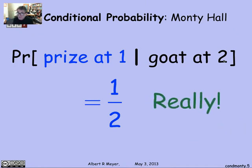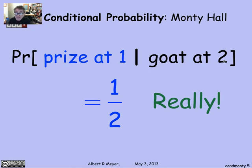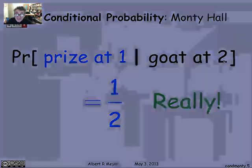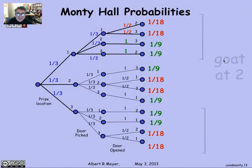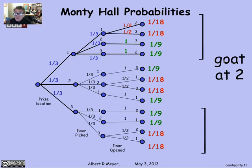That's the argument people were making: when the contestant sees the goat at door 2 and tries to decide whether the prize is at door 1 or the other door, it's equally likely, so it doesn't matter whether they stick or switch. That's a correct argument, but it's not calculating the probability of the stick strategy winning. Why? Because there's more information available than just 'goat is at 2.'